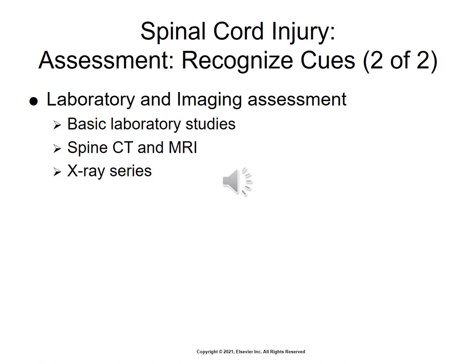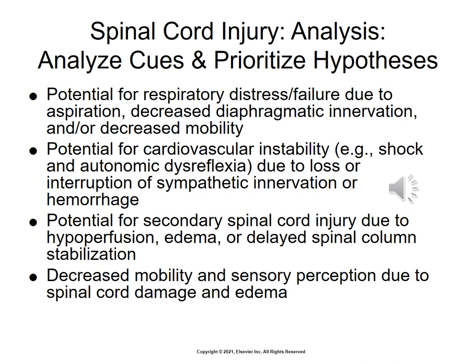For laboratory and imaging assessments, spinal CT and MRI are performed to determine the degree or extent of the injury, beginning on page 881. Analyzing cues and prioritizing hypotheses: there is potential for respiratory distress and failure due to aspiration, decreased diaphragm function, and/or decreased mobility; potential for cardiovascular instability, shock, and autonomic dysreflexia due to loss or interruption of the sympathetic nervous system or hemorrhaging; potential for secondary spinal cord injuries due to hypoperfusion, edema, or delayed spinal cord stabilization; and decreased mobility and sensory perception due to spinal cord damage and edema.